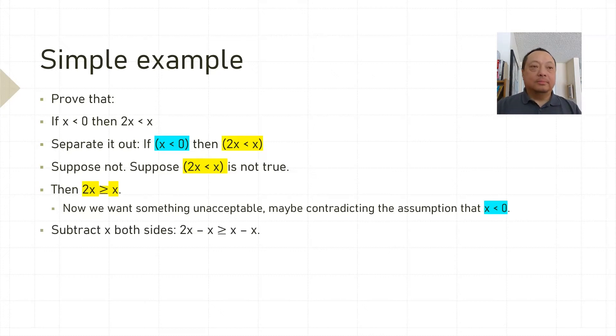Subtract x both sides. I get x greater than or equal to 0. This contradicts the premise, I have my contradiction.